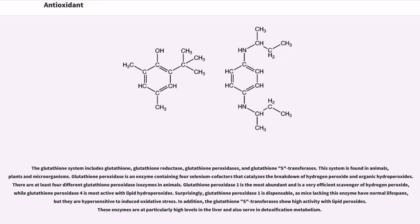The glutathione system includes glutathione, glutathione reductase, glutathione peroxidases, and glutathione S-transferases. This system is found in animals, plants and microorganisms. Glutathione peroxidase is an enzyme containing four selenium cofactors that catalyzes the breakdown of hydrogen peroxide and organic hydroperoxides. There are at least four different glutathione peroxidase isozymes in animals. Glutathione peroxidase 1 is the most abundant and is a very efficient scavenger of hydrogen peroxide, while glutathione peroxidase 4 is most active with lipid hydroperoxides.